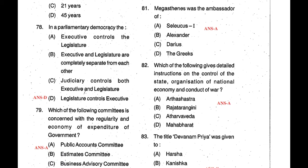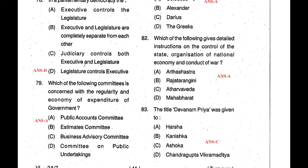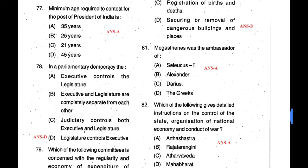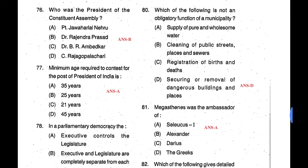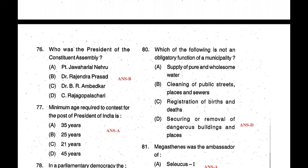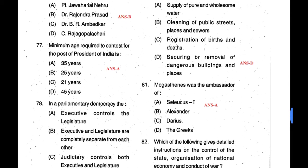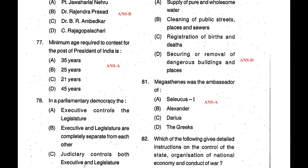Question 79: Which committee is concerned with the regularity and economy of expenditure of the government? The correct answer is the Public Accounts Committee — answer is A. The Public Accounts Committee has 22 members: 15 from Lok Sabha and 7 from Rajya Sabha. The chairman is appointed by the Speaker of the Lok Sabha and they examine the report of the CAG. Question 80: Which of the following is not an obligatory function of municipalities? The answer is D — securing or removal of dangerous buildings and places is not a part of municipalities' functions.